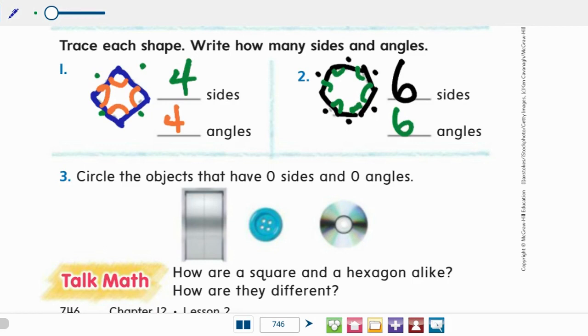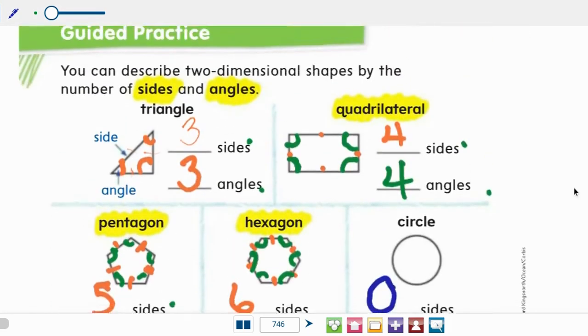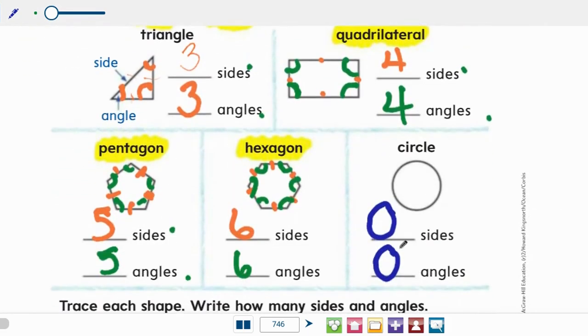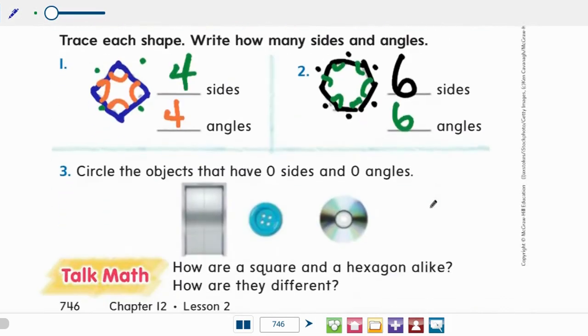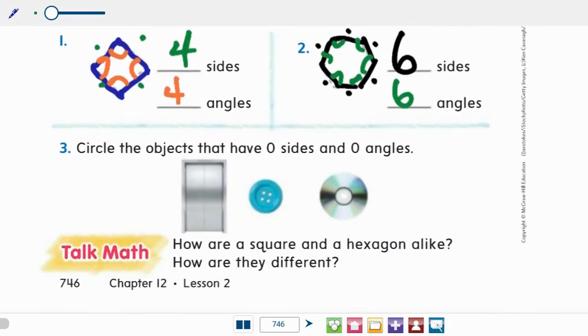Number three says to circle the objects that have zero sides and zero angles. Well, I'm going to jump back up to the top real quick. Zero sides and zero angles means a circle. So when I come down here, a button is a circle. So I'm going to circle that. And a CD is a circle. So I'm going to circle that one. Alright. So I can take a look here and say this has one, two, three, four sides because it's a door that does not have zero sides, which is why I did not circle that one.